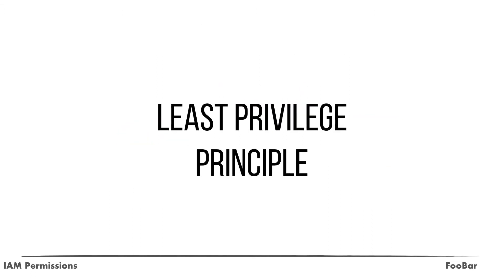Serverless applications should always follow the principle of least privilege. This means a Lambda function should only be given the privileges which are essential to perform its intended logic. In a system where all functions share the same set of overprivileged permissions, a vulnerability in a single function can eventually scale into a system-wide security catastrophe. The way to mitigate this risk is to reduce each function's permissions to the minimal set needed for it to do its task.